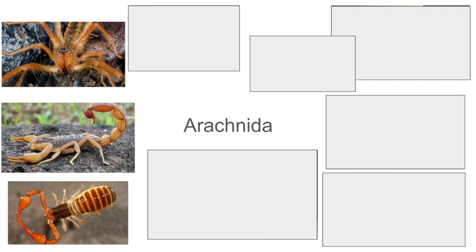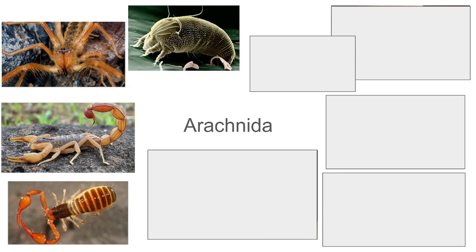Here we have the camel spiders or sun spiders — the solifugids. These guys are really cool. They're not venomous, they can run really fast, and their chelicerae are almost like saws — pincer-like, but huge and front-facing, really good at tearing stuff apart. Here we have the mites, who are also arachnids. Mites are usually small — some of them are downright microscopic. In fact, there are many of them in my room right now, as they probably are in yours. Dust mites are everywhere; they even live on our skin. They're some of the smallest arachnids we're going to come across.